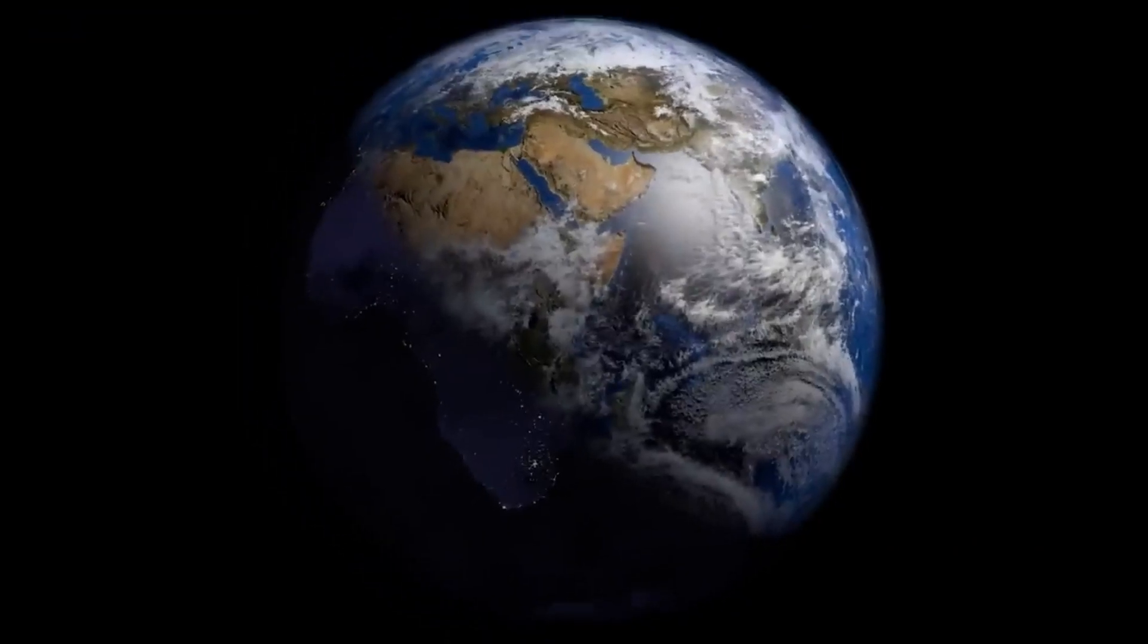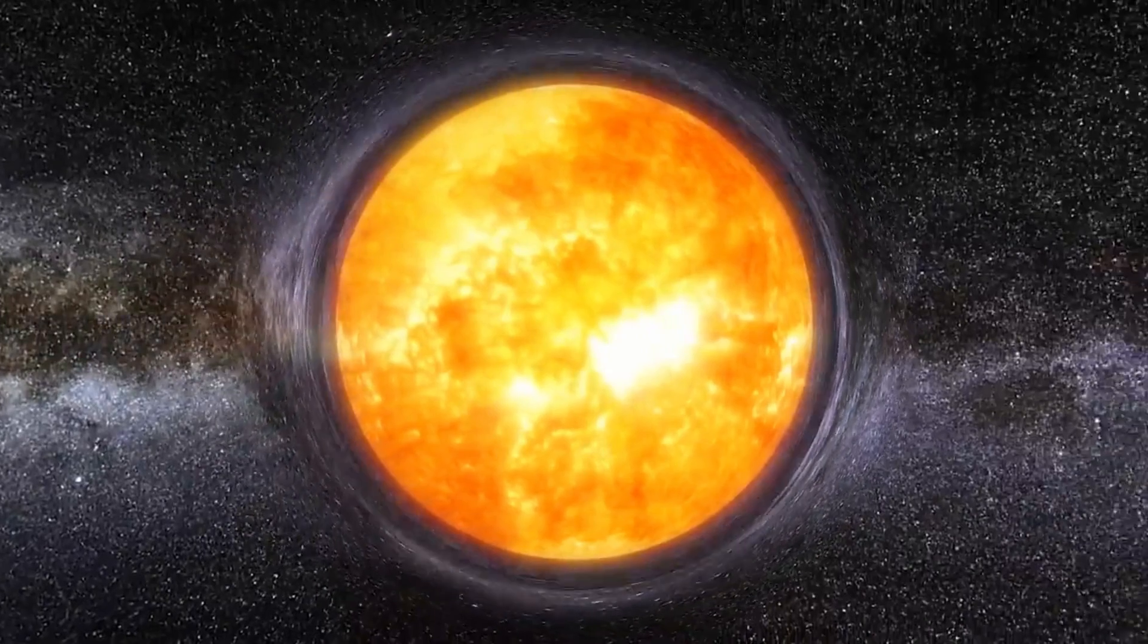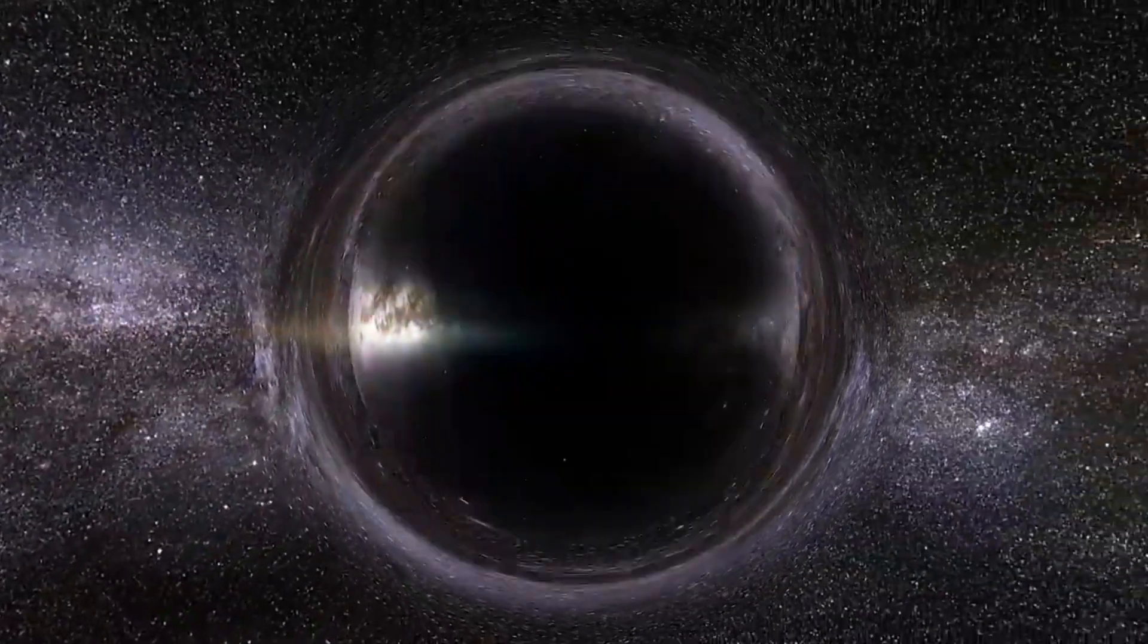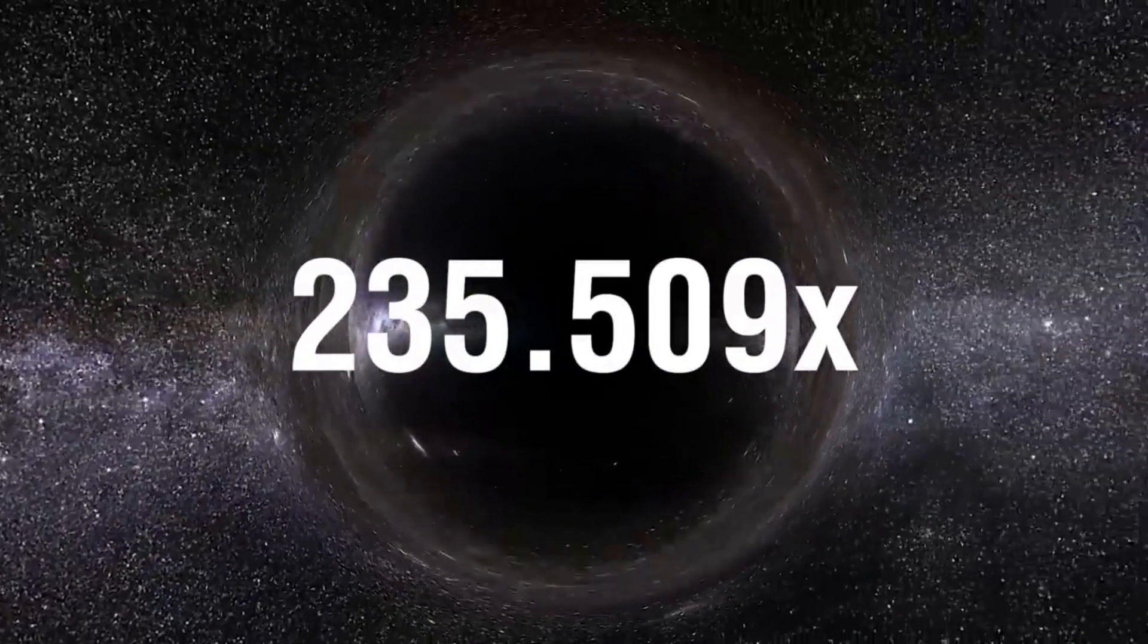To provide a visual representation, a black hole with the mass of the Earth would have a diameter of about 9 mm. For a black hole to possess the diameter of the Sun, it would require a mass approximately 235,509 times that of our star.